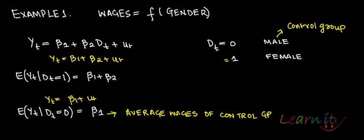So what is our control group here? Males. Beta 1 hat is actually telling you the average wages of the control group, because beta 1 hat is what you get when dt equals to zero. Now, beta 1 plus beta 2 in addition tells you the average wages of the female group.